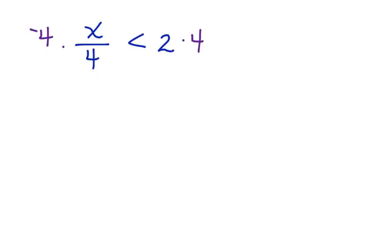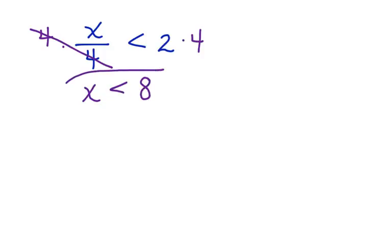These 4's cancel. Bring down the x. x is less than 2 times 4, which is 8. When we substitute a value that is less than 8 into this inequality, it will make it into a true statement.